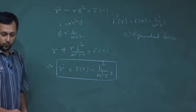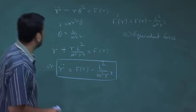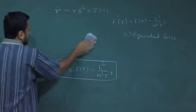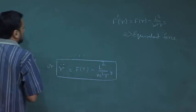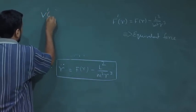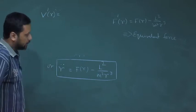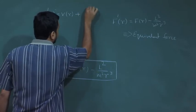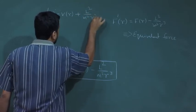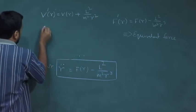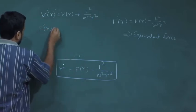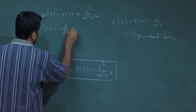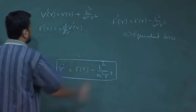If there is an equivalent force present, there will also be an equivalent potential present. So if we write an equivalent potential V'(r) = V(r) + L²/(2M²r²), then F'(r) = −dV'/dr, because it is a single-variable function of r.